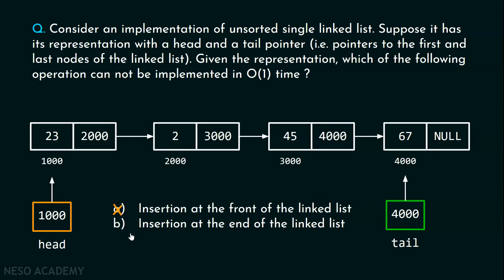Let's consider option B: insertion at the end of the linked list. This will also take constant time because we have a tail pointer pointing to the last node of the list. If we want to insert a node after the last node, we just update the link part of the current last node and update the tail pointer to point to the new node. This also takes O(1) time.